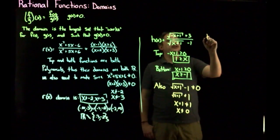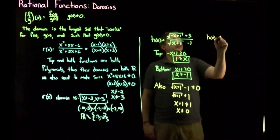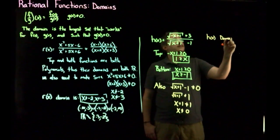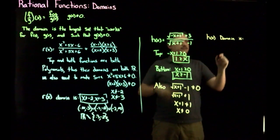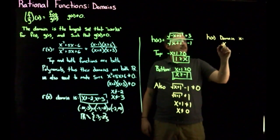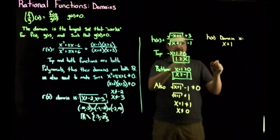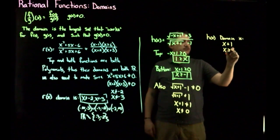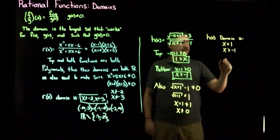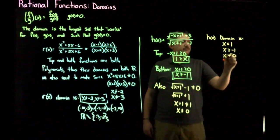So then h of x domain is, I need to make sure that I have x less than or equal to 1. That's this. x greater than or equal to negative 1. That's this. And x not equal to zero.